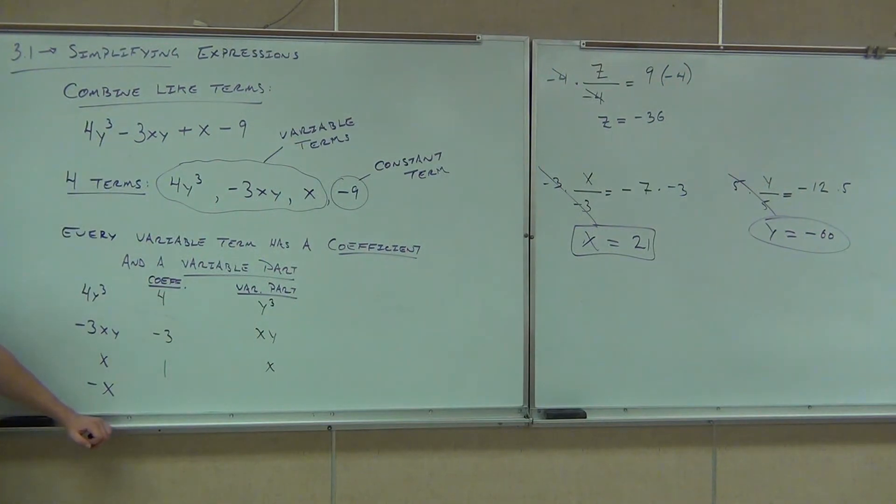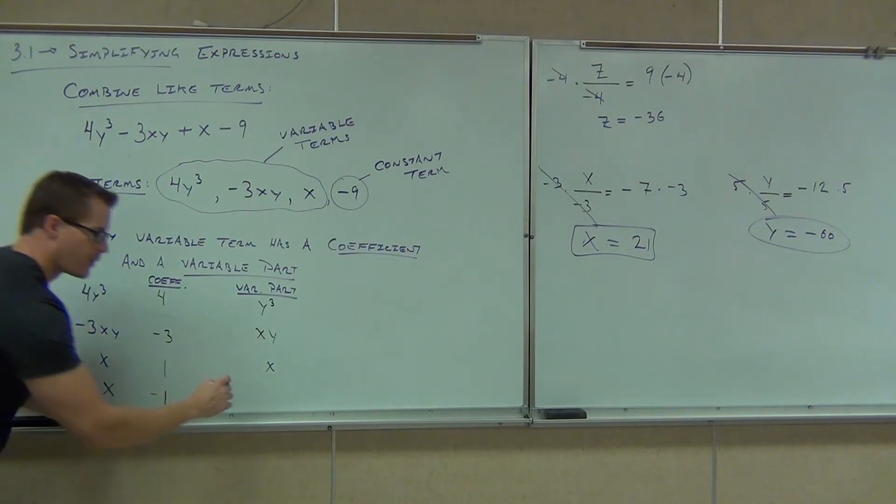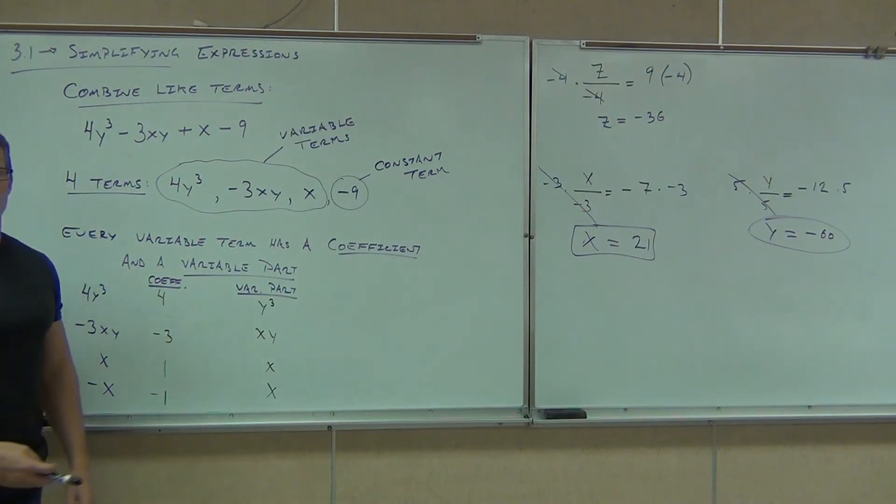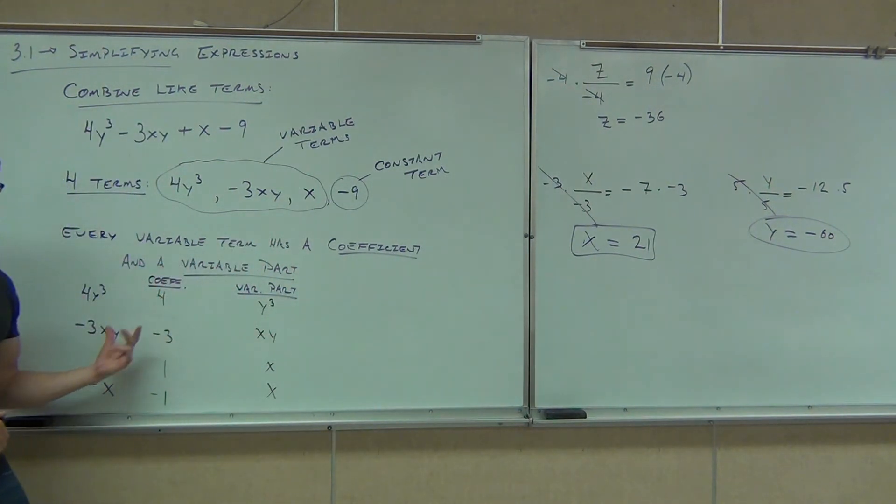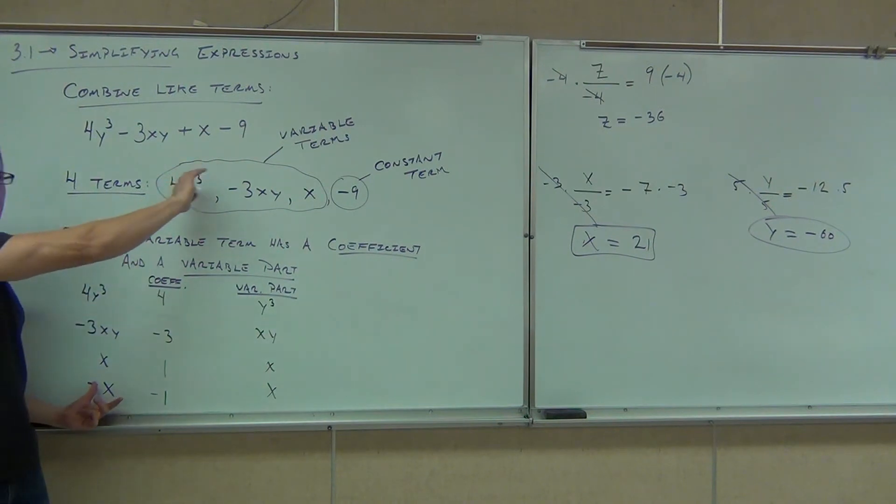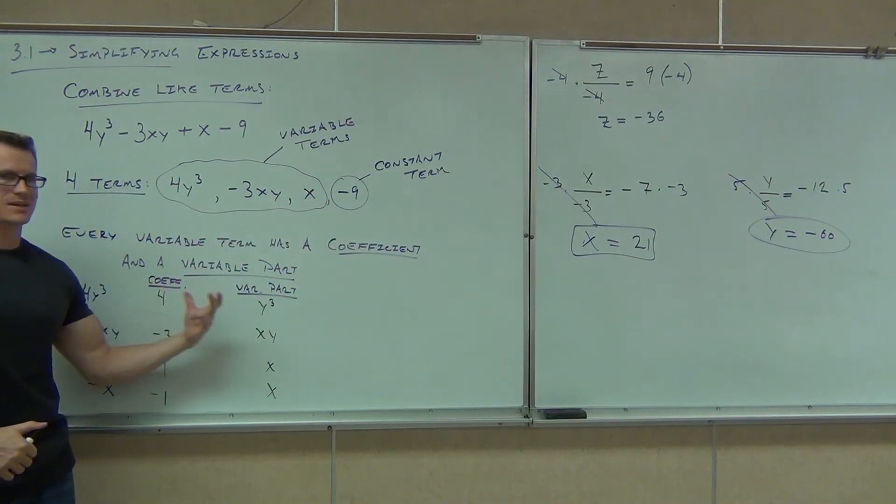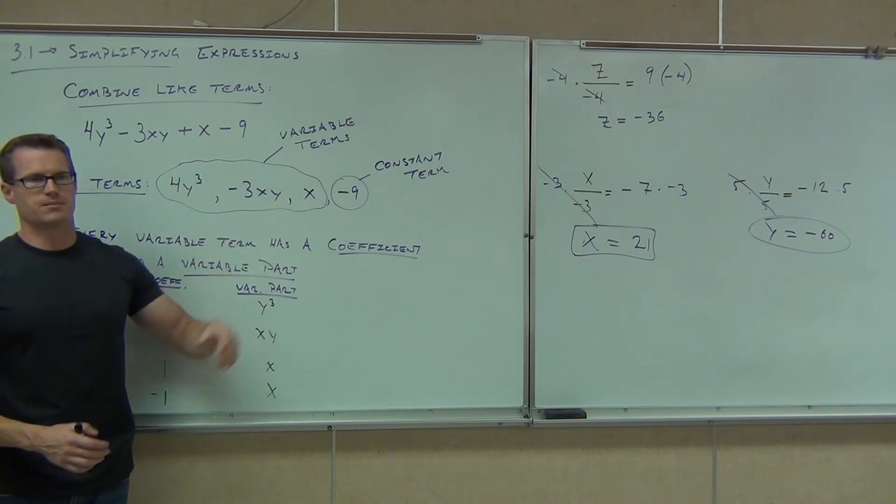So anytime you see a variable all by itself, it's implied that it has a coefficient of one. Are you clear on that one? Okay, so that means when we get to combine like terms, and you see an x by itself, it doesn't mean zero x. It means one x. That actually means something. You have to add that on there, or subtract. And then finally, negative x. What's the coefficient for negative x, do you think? Negative one. Very good. So negative one, and the variable part is again, x. So whenever we have no number up front, we imply that it's a one, and we carry the sign with it.